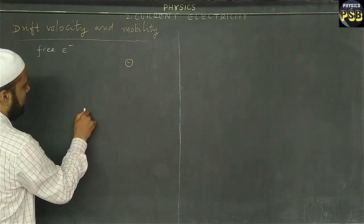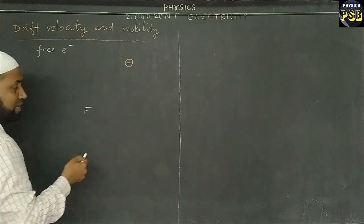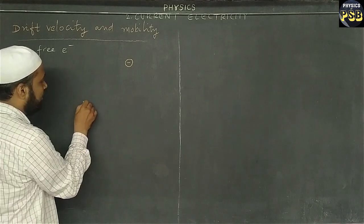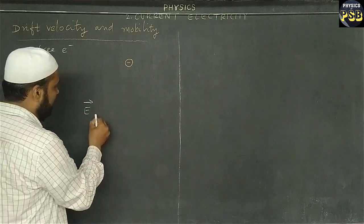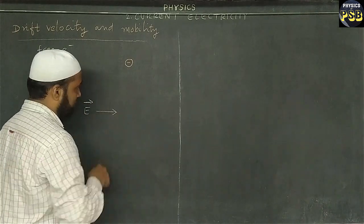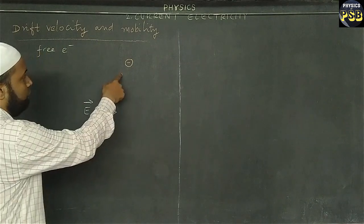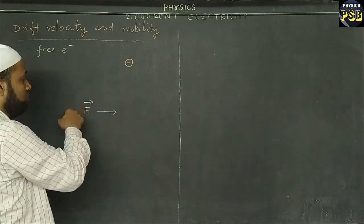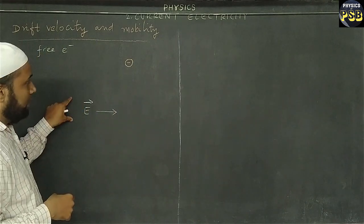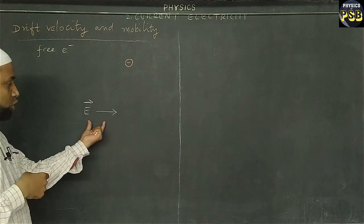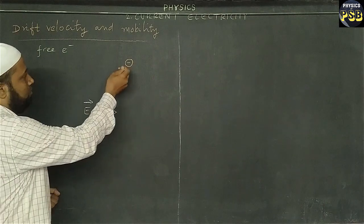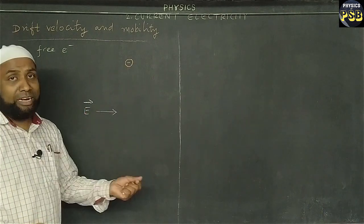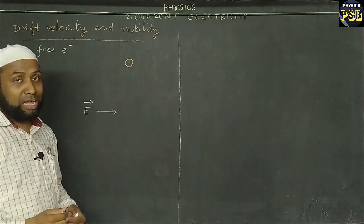The electron present in a conductor. Now I connect a cell or battery between the ends of the conductor. That means the conductor is in an electric field, and I say that the electric field is acting in this direction. Then free electrons will move